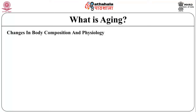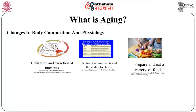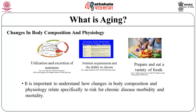There are many changes in body composition and physiology with advancing age. These changes have a profound influence on the nutritional status of aging adults and affect the body's metabolism, nutrient intake, absorption, storage, utilization, and excretion of nutrients, as well as the nutrient requirement and the ability to choose, prepare, and eat a variety of food. It is important to understand how changes in body composition and physiology relate specially to the risk for chronic diseases, morbidity, and mortality.